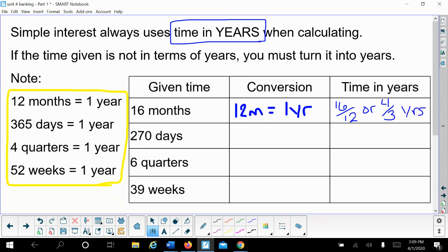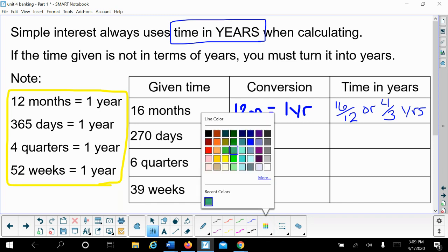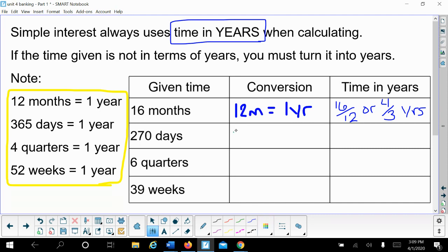For 270 days, we're going to use the conversion of 365 days in one year. So if I'm given 270 days, I'm going to divide it by the total number of days in a year.